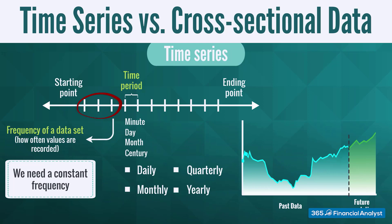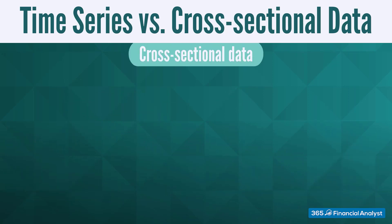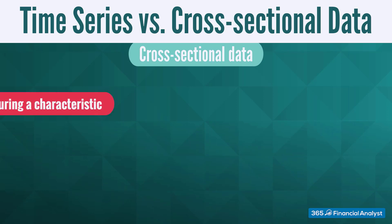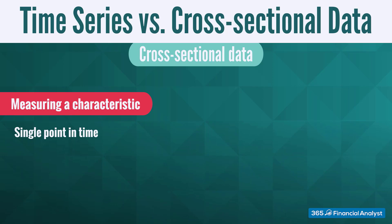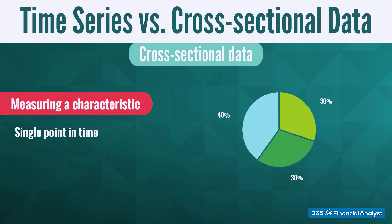Another type of data commonly used in investment analysis is cross-sectional data. This is data on some characteristics of individuals, groups, regions, or companies that are measured at a single point in time. An investor's portfolio allocation at the end of a given year is an example of cross-sectional data, consisting of, let's say, 40% in equities, 30% in bonds, and another 30% in alternative asset classes — representing a cross-sectional breakdown.